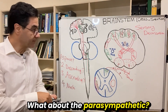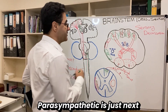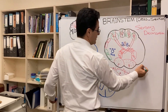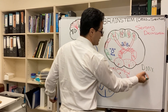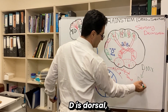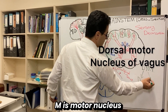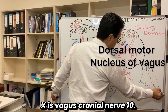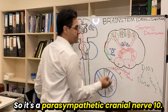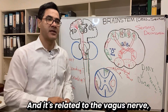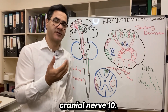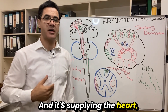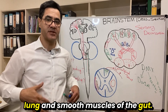What about the parasympathetic? Parasympathetic is just next to the hypoglossal nucleus — we have the DMX. DMX stands for dorsal motor nucleus of vagus, cranial nerve 10. It's a parasympathetic nucleus related to the vagus nerve, cranial nerve 10, supplying the heart, lungs, and smooth muscles of the gut.